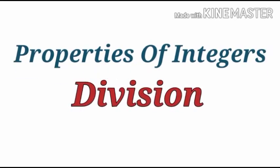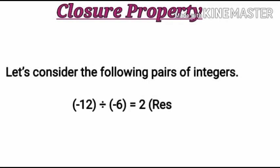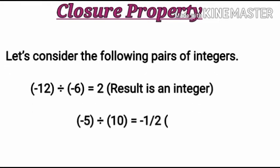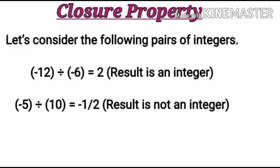Properties of integers under division. First property is closure property. Let's consider the following pair of integers. First pair is -12 divided by -6. The result is equal to 2.